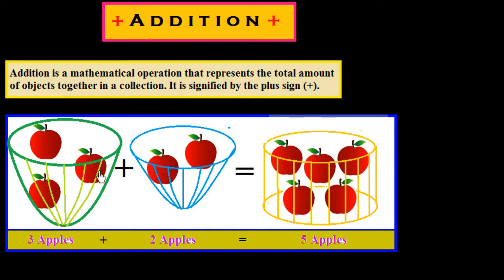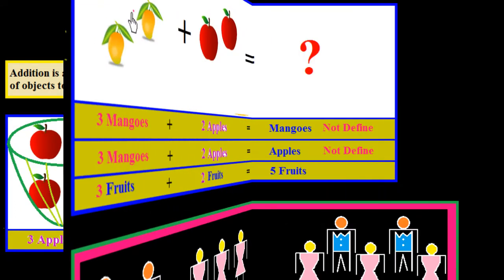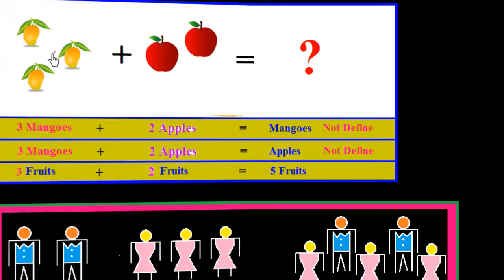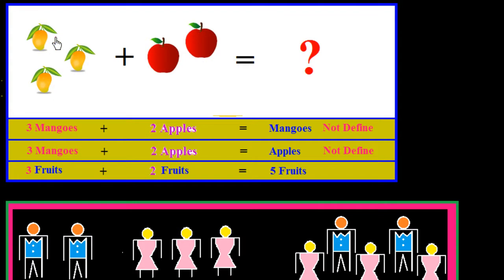We also transfer these three apples into this cylindrical bucket. So how many apples do we get? We count: one, two, three, four, five apples. We have a total of five apples together. So three apples plus two apples is equal to five apples.